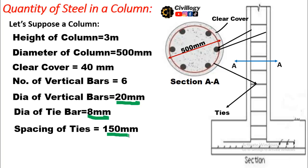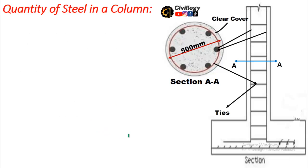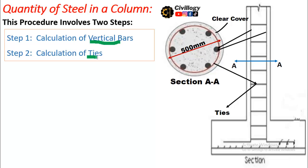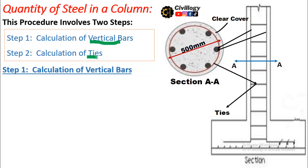This procedure involves two steps: the first step is the calculation of vertical bars or longitudinal bars, and the second step is the calculation of ties. The calculation involves the number of bars and their weight, and similarly the number of ties and weight of ties — overall we will calculate the quantity of steel in kilograms.